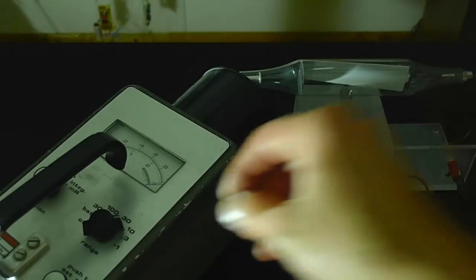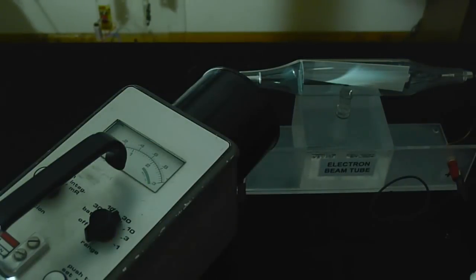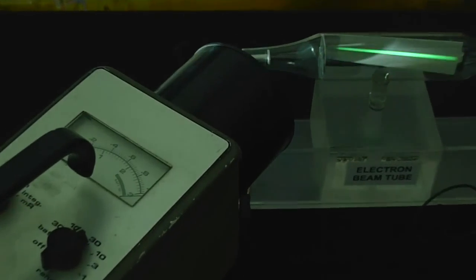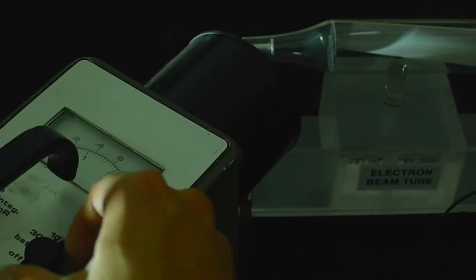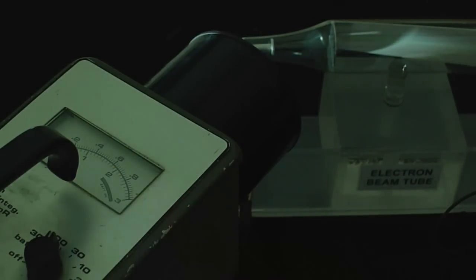Well, there's only one thing to do. Let's turn it up. Now, we are on the thirty millirentgens per hour scale. Bang! The needle is, again, off scale. So, what do we do? We turn it up. I'll put it on the one hundred millirentgens, or one tenth of a rentgen per hour. Wham! Goes off scale easily.